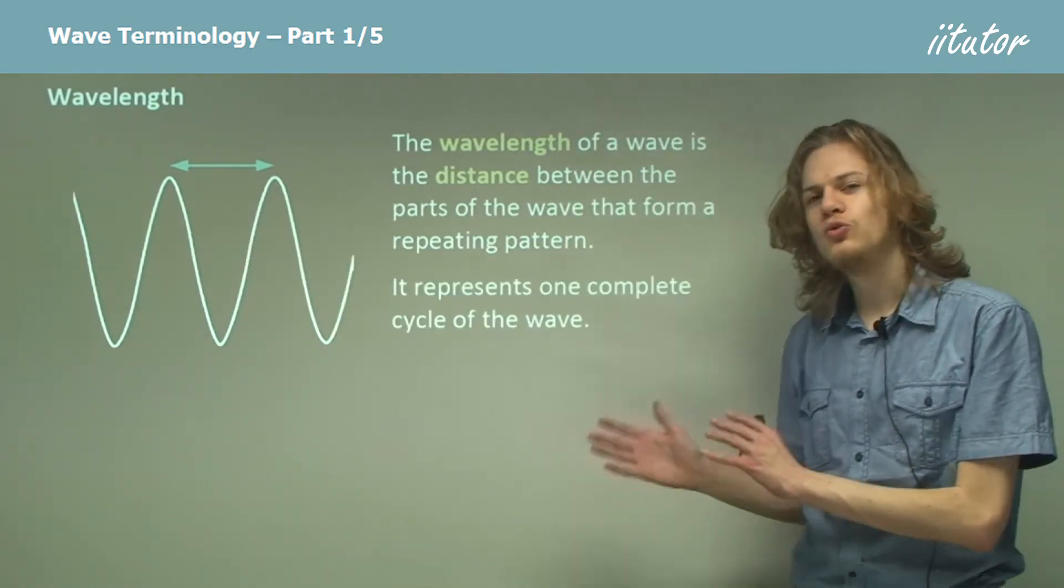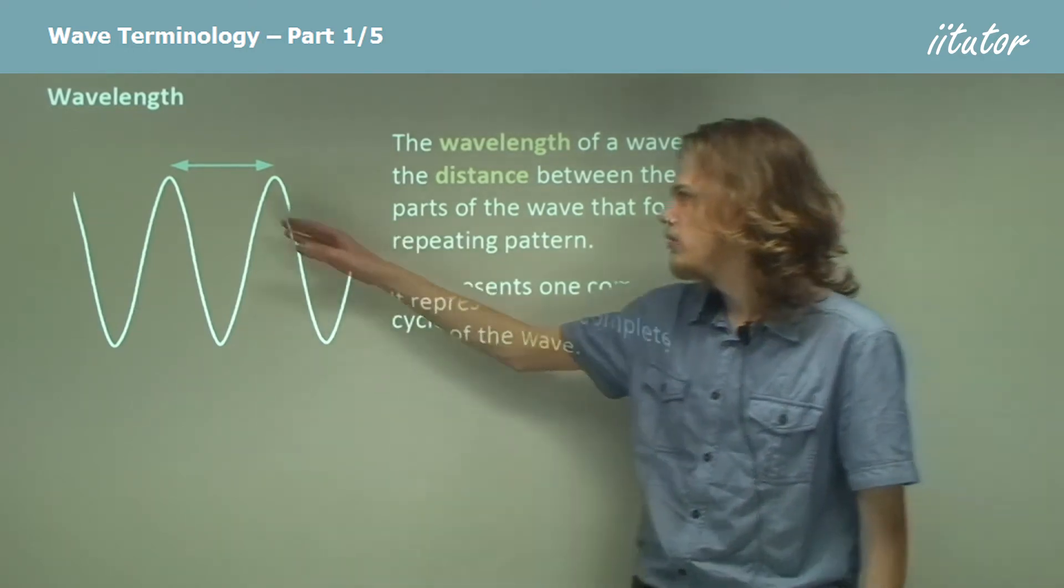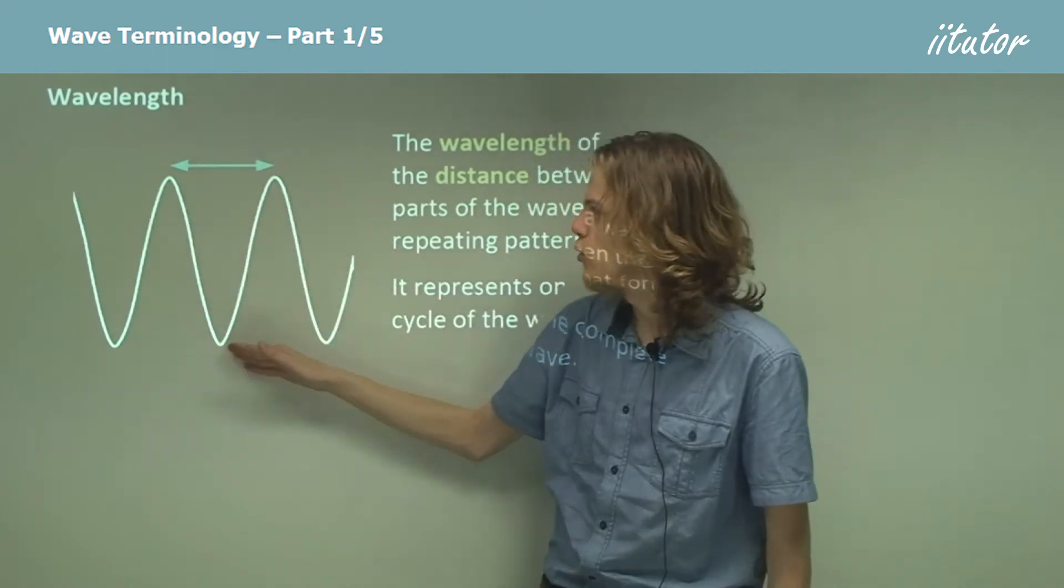This represents one complete cycle of the wave. Over one wavelength, this part of the wave goes all the way down and then all the way back up.